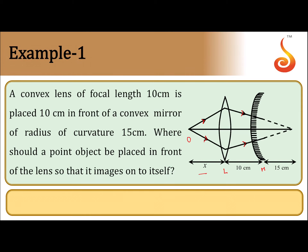We have to adjust the value of x such that the image of the object falls on itself. For this to happen, light rays must fall perpendicular to the convex mirror, so that the light ray retraces its path back through the lens and falls on the object. We need to find that value of x.